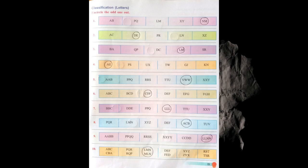Now seven: BBC, DDE, PPQ, LLT, TTU, XXY. LLT is the odd one because in all other groups the first letter is written twice followed by the next letter — like B B C, D D E, P P Q, T T U, X X Y. But in LLT, the letter L is written three times, which makes it the odd one.